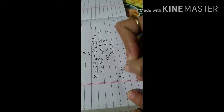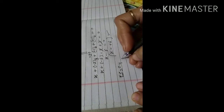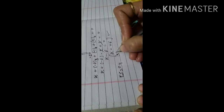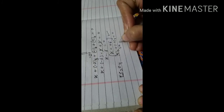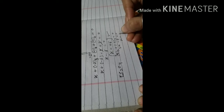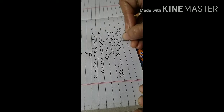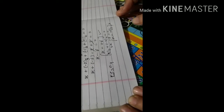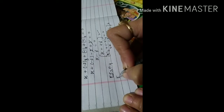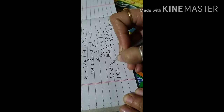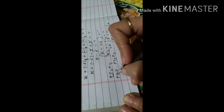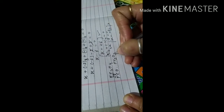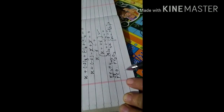Now for Fe3O4: to find the oxidation state of iron, simply writing 3x + 4×(-2) = 0 gives 3x - 8 = 0, so x = 8/3, which is fractional. We don't accept this. Actually, Fe3O4 is a combination of FeO and Fe2O3. Iron shows variable oxidation states: +2 in FeO (ferrous) and +3 in Fe2O3 (ferric).